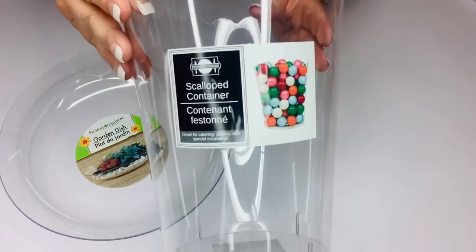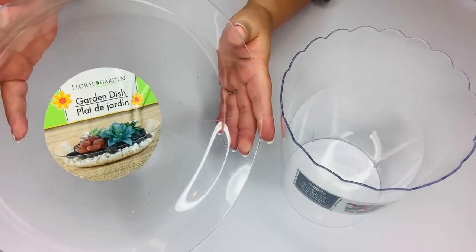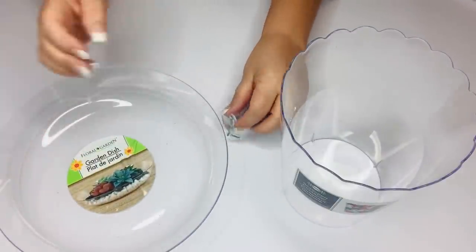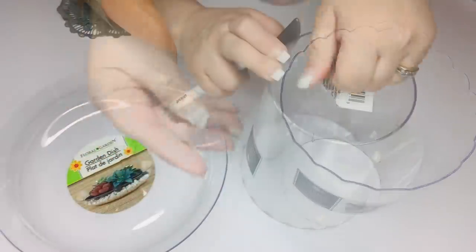For this Dollar Tree DIY, I'm using this clear container and then the large garden dish. They do have the smaller ones, but this is a larger one. So be sure if you're going to put these two together, the larger one looks better and then I'm going to be using a clear hook to attach to the side.